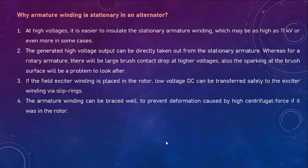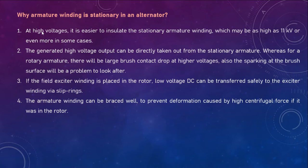Why is the armature winding stationary? This is an important question: what are the advantages of stationary armature winding placed in the stator when compared to rotating armature winding placed in the rotor? The armature winding is always preferred to be stationary in the stator, and field winding to be on the rotor side.